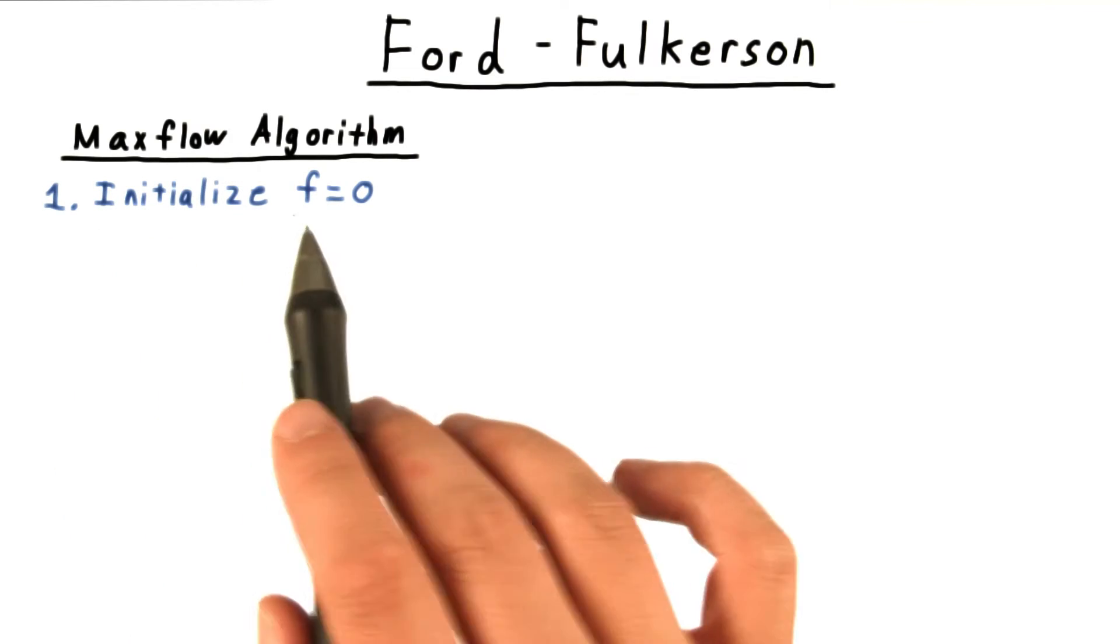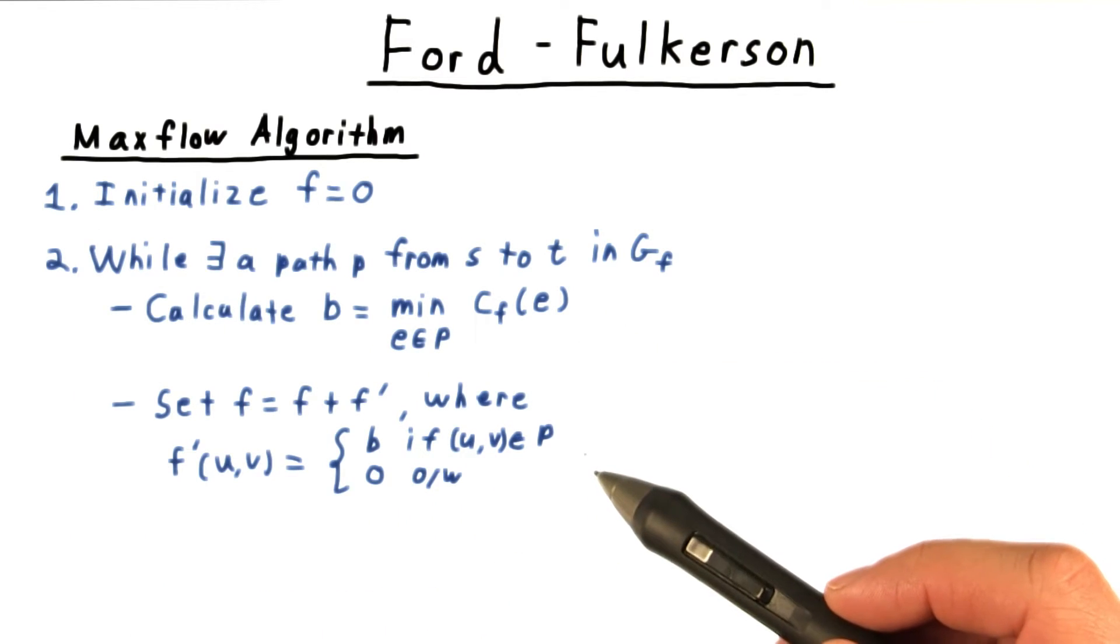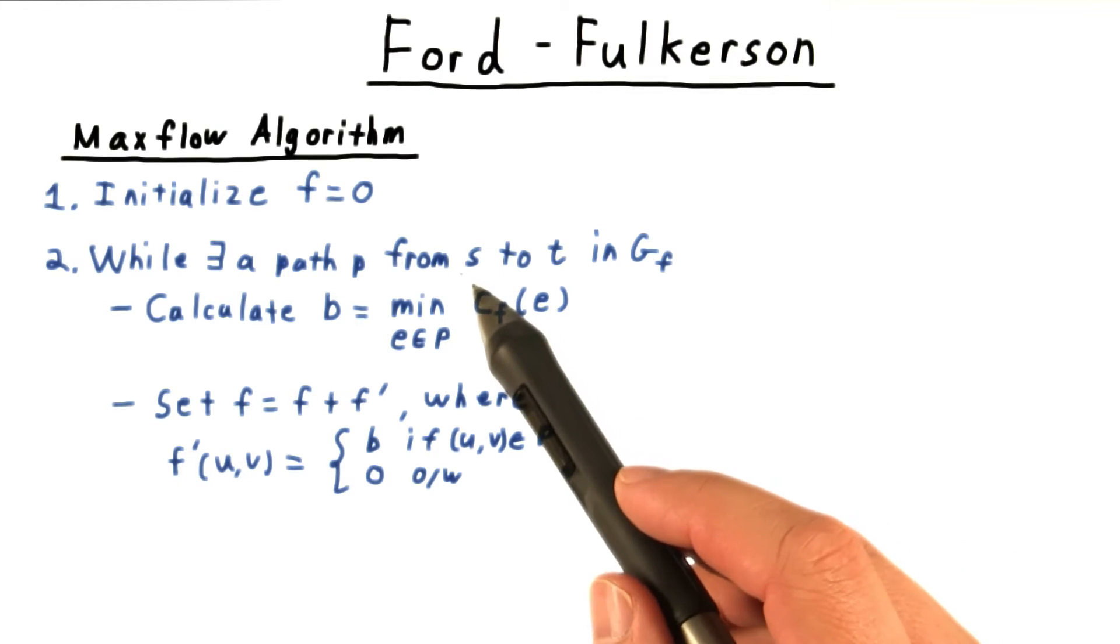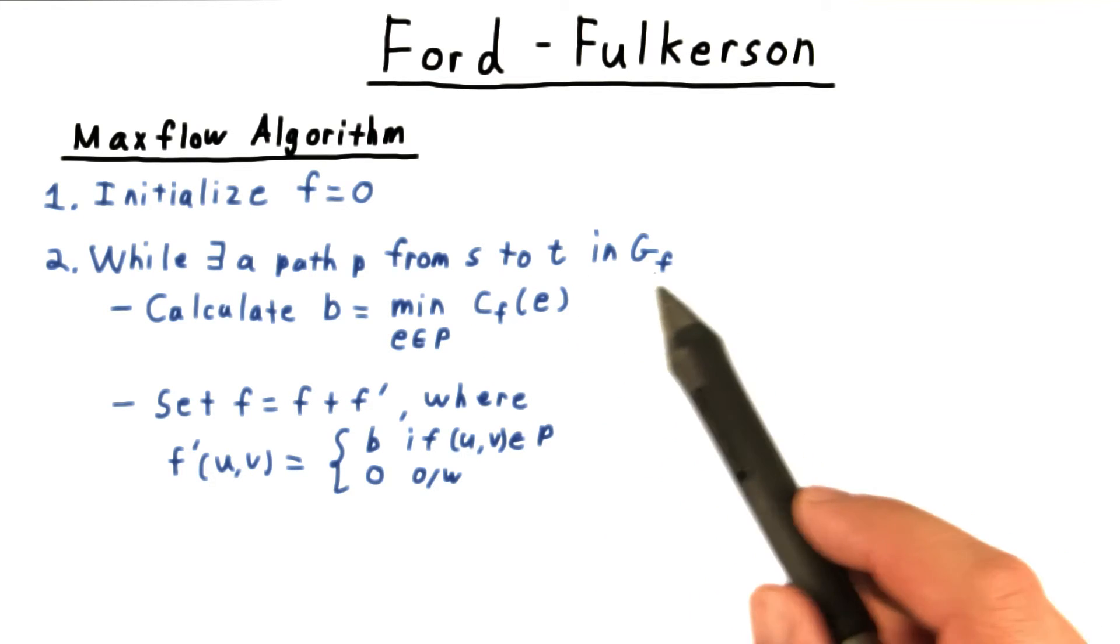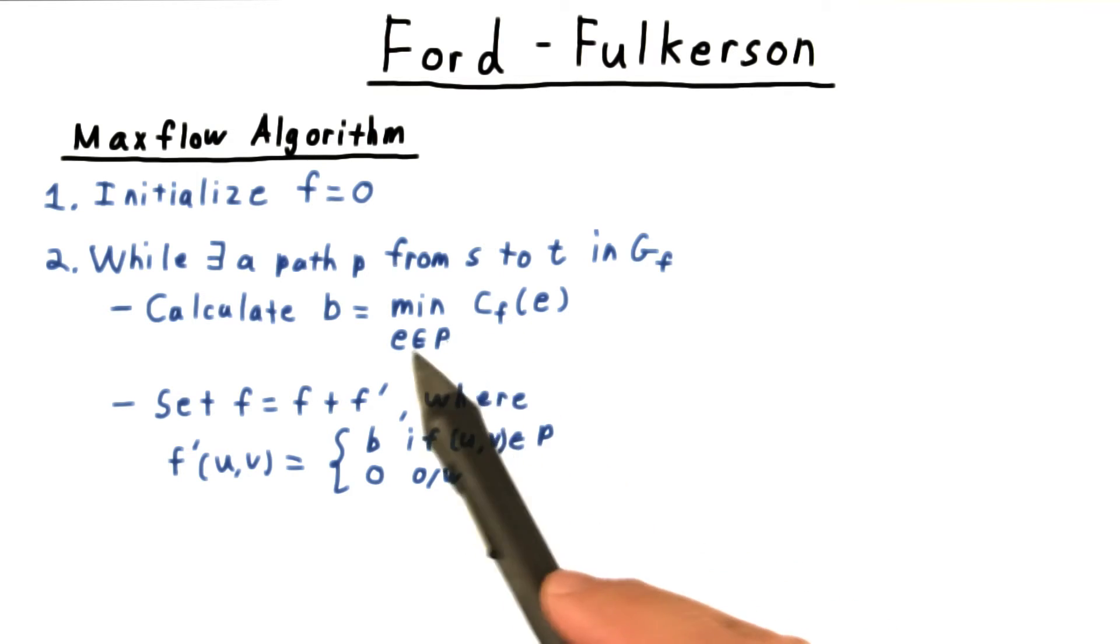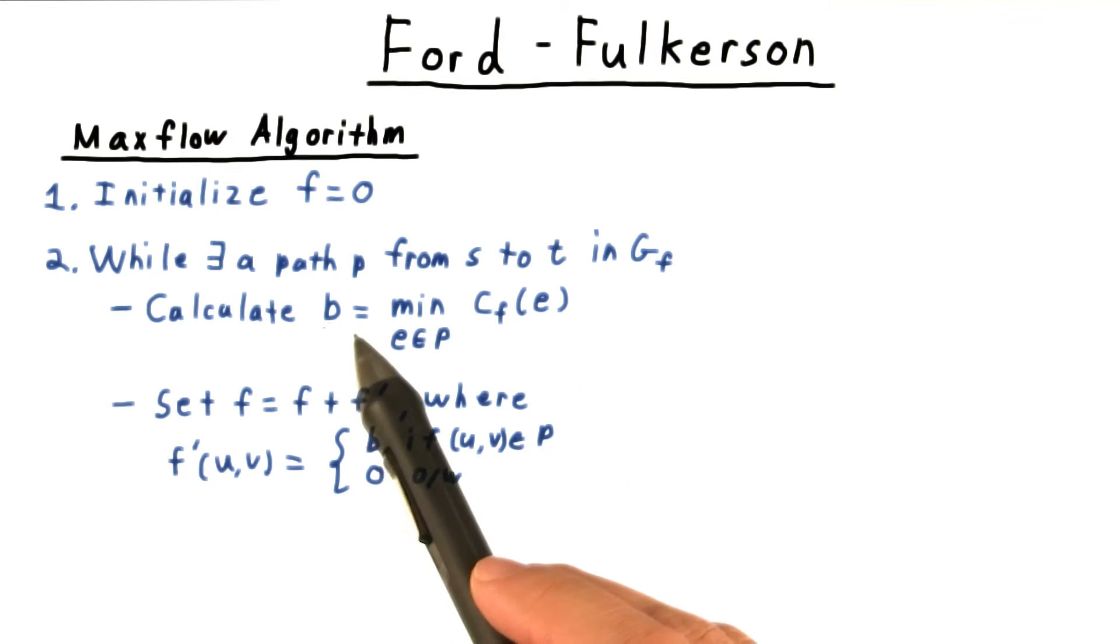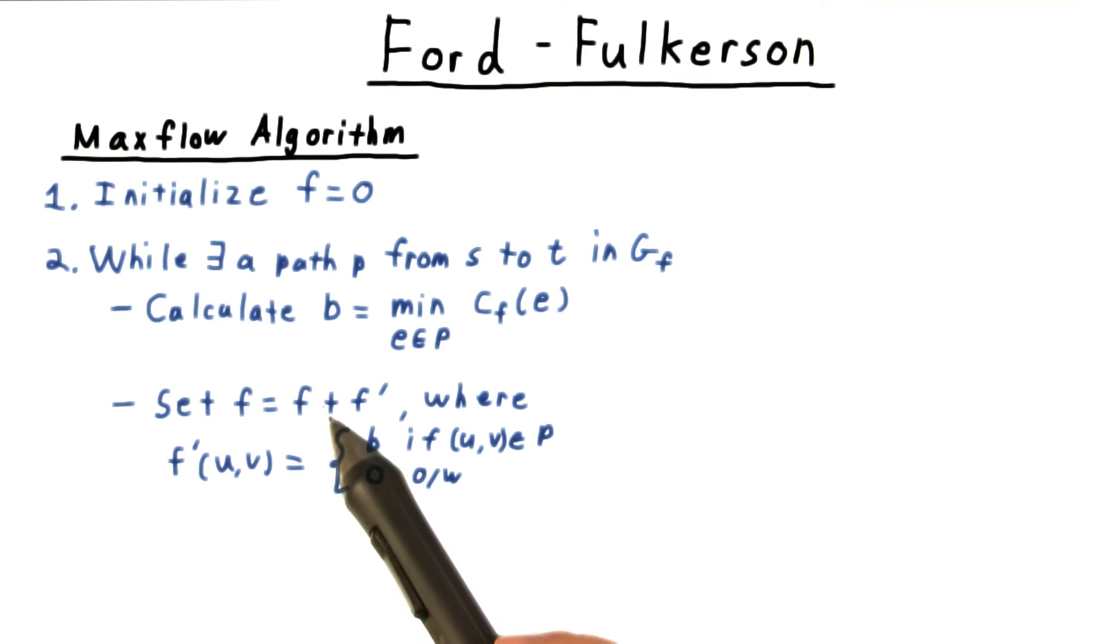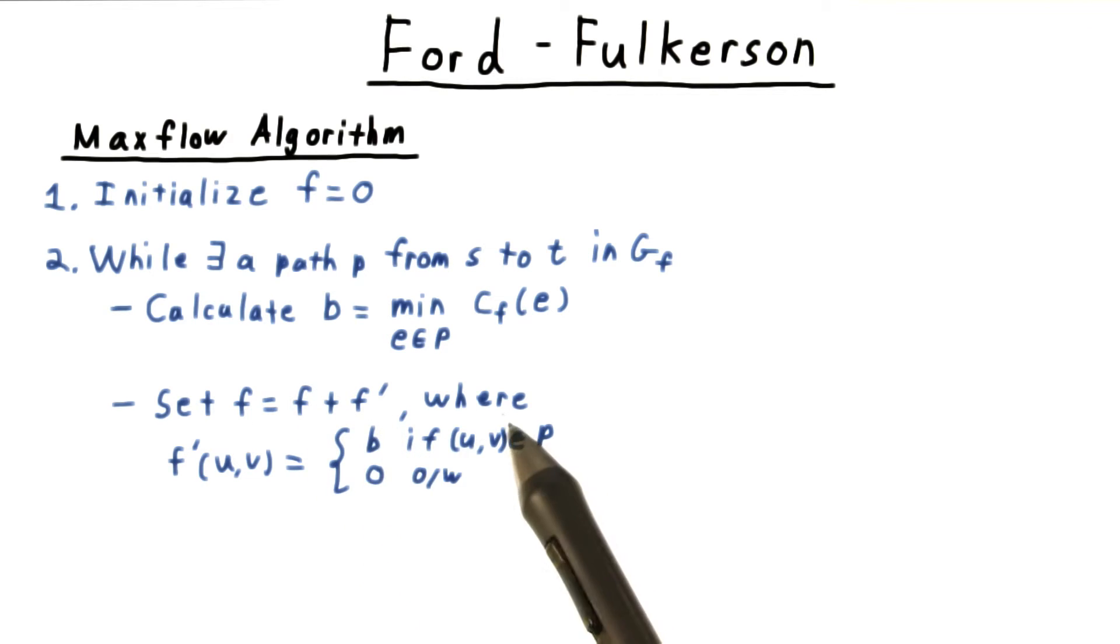We begin by initializing the flow to zero. Then, while there's a path from the source to the sink in the residual graph, we're going to calculate the minimum capacity along this path. We'll call that b. And then we're going to augment our flow where the augmenting flow has b along this path and zero everywhere else. Once there are no more paths in the residual graph, we just return the current flow that we found in this variable F.